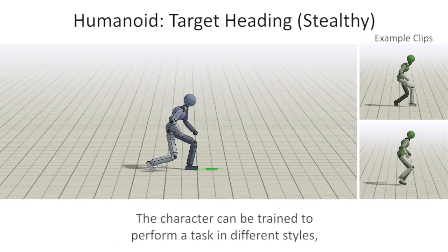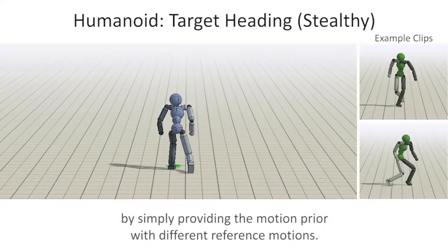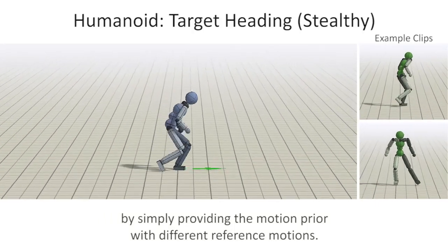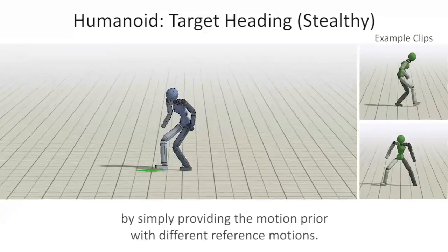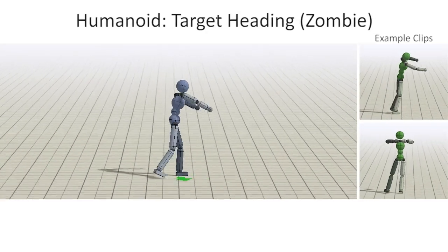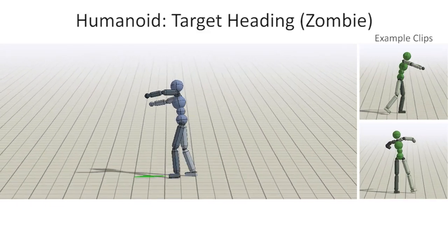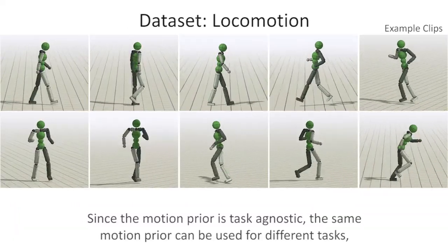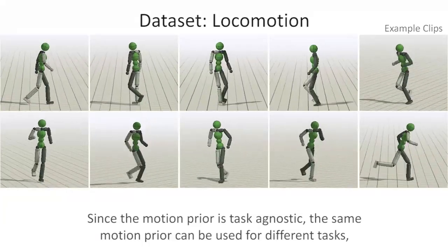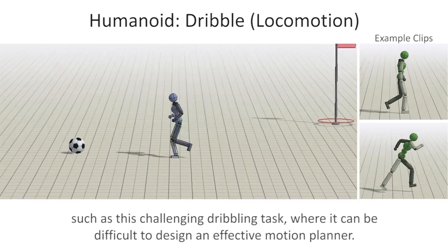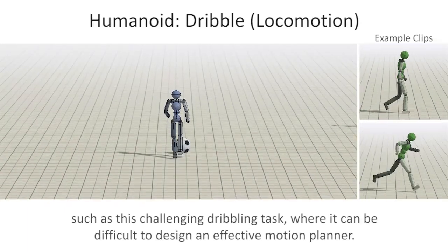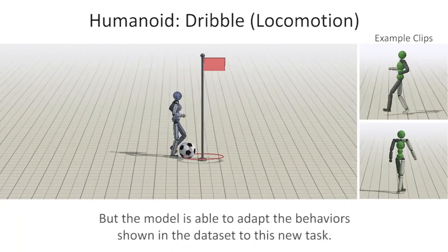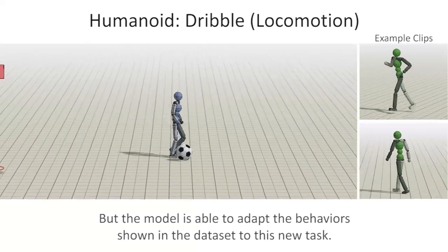The character can be trained to perform a task in different styles by simply providing the motion prior with different reference motions. Since the motion prior is task agnostic, the same motion prior can be used for different tasks, such as this challenging dribbling task, where it can be difficult to design an effective motion planner. Note that the dataset does not contain any dribbling motion clips, but the model is able to adapt the behaviors shown in the dataset to this new task.